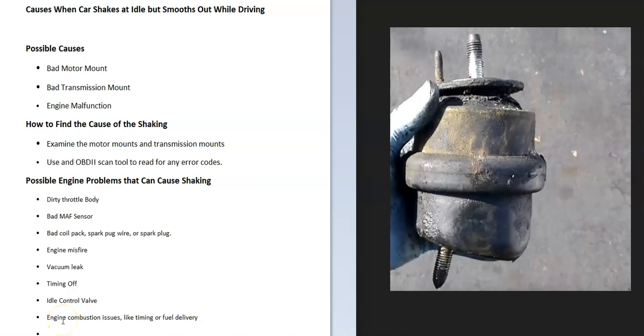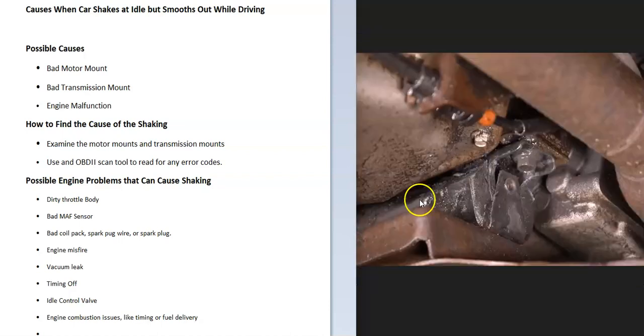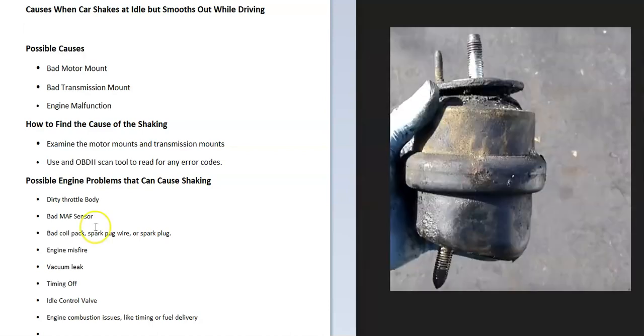It can vary a bit on how motor mounts are laid out—there's usually one on each side of the engine and one on the transmission. If you have a rear-wheel drive vehicle, the transmission mount might be two or three feet behind the engine.